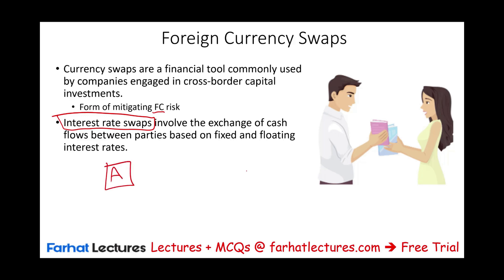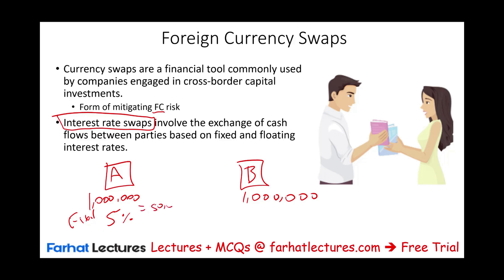Let's assume we have Company A and Company B. Company A borrowed a million dollars. Company B borrowed a million dollars as well. Company A has excellent credit, so they get a fixed rate at 5% — they pay $50,000 per year. Company B doesn't have the best credit, but they were able to get a variable rate, also starting at 5%, so they also pay $50,000.